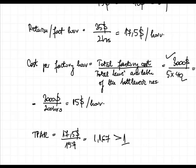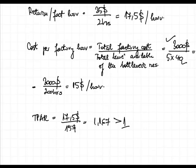We could also extend the total time available of the bottleneck resource — for example, by purchasing additional machinery. This increases total time available, which decreases the cost per factory hour, although the new equipment will likely push up factory costs through depreciation. This is how you should deal with throughput accounting in your examinations. In our next video we will discuss decision-making techniques in the short term.